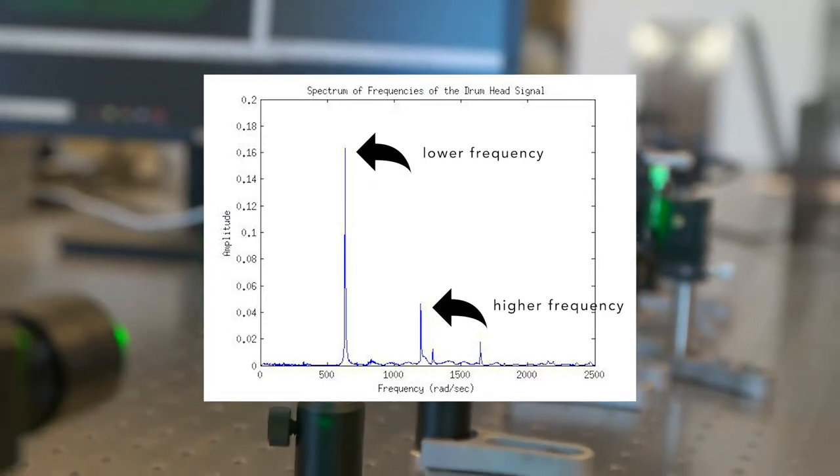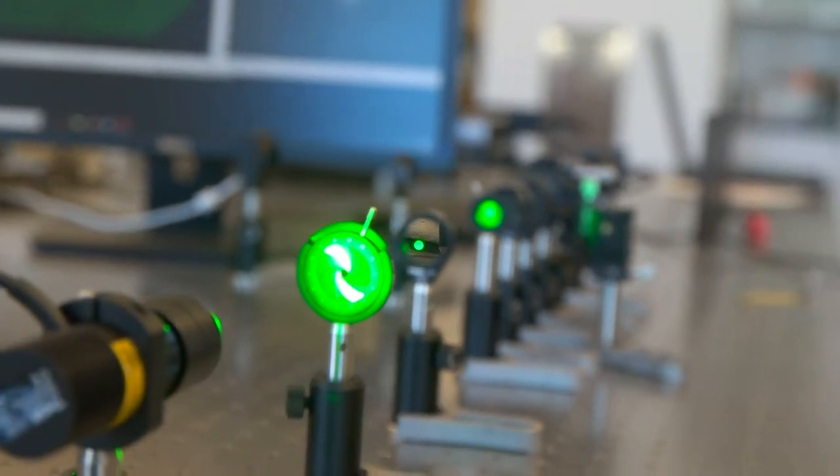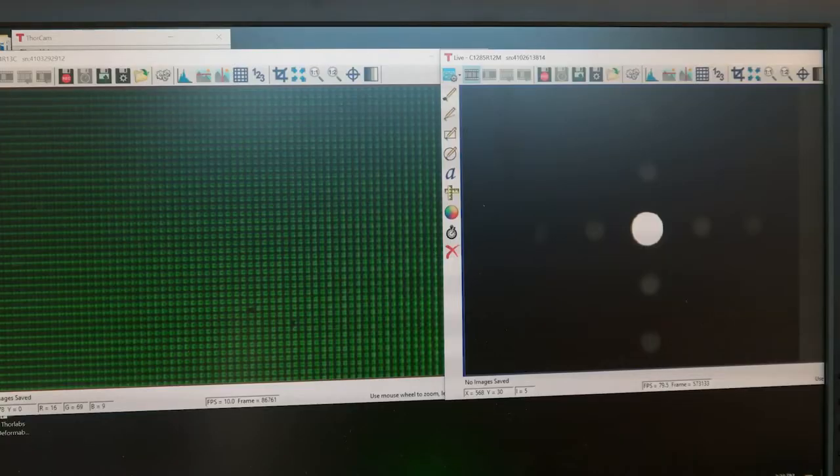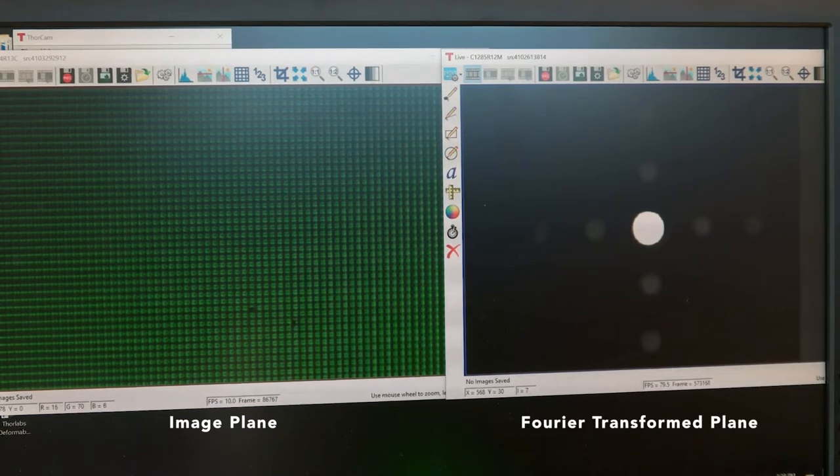We can do the same thing with images. For example, if the original image is simply horizontal black and white bars, then that can be approximated by a single vertical sine wave at a particular spatial frequency. We would get two dots on the resulting power spectrum image, or Fourier transformed image.